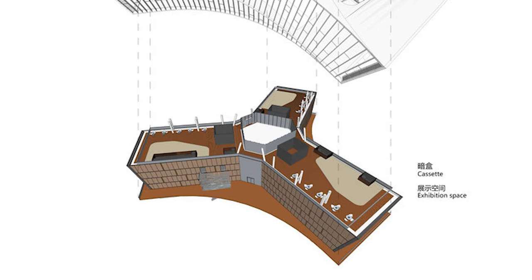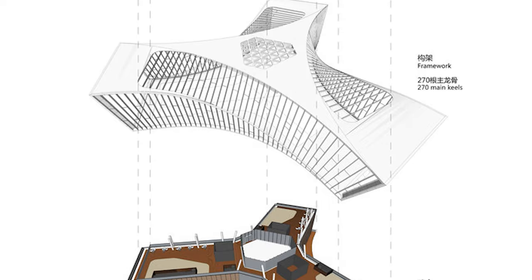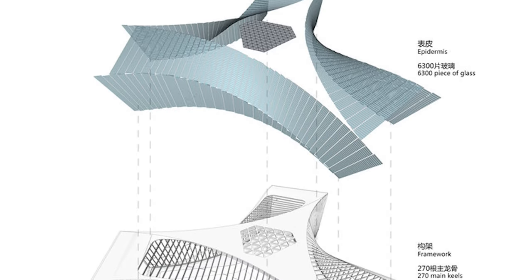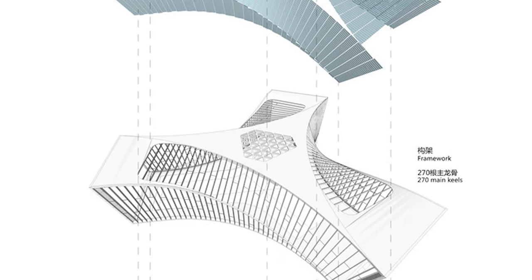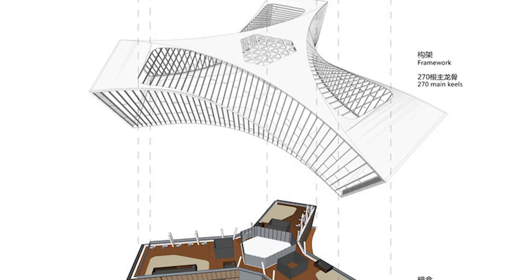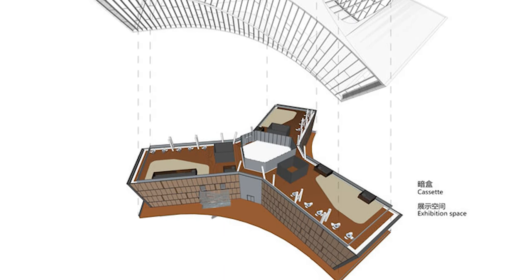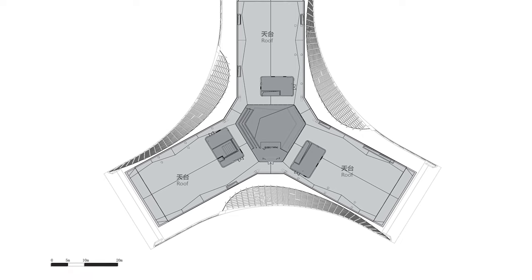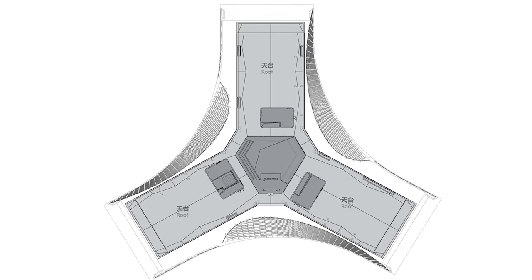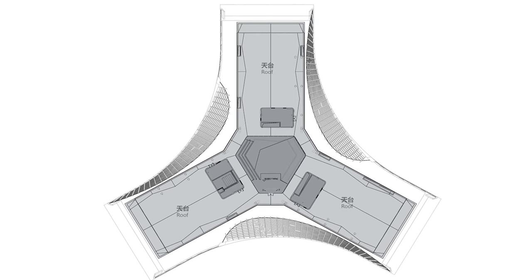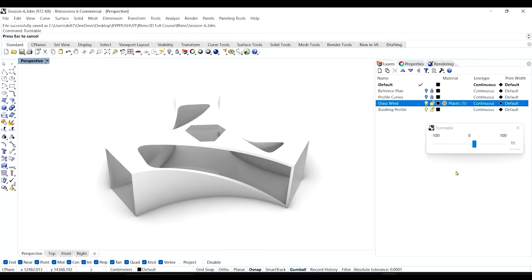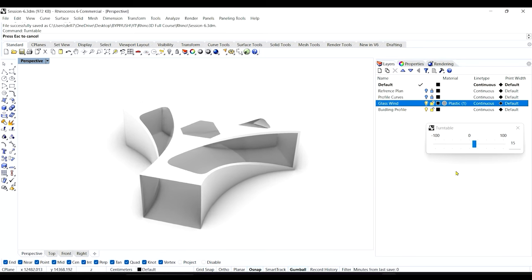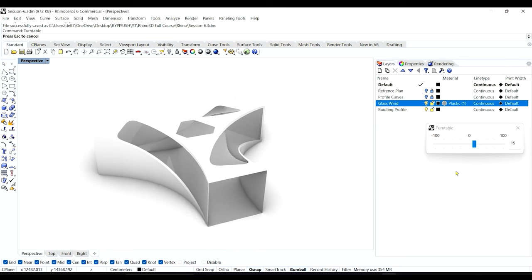Today's model will be Prince Bay Marketing Exhibition Centre, designed by ACOM Architects and located in China. I'll be using a site plan as a reference and will scale that site plan. You can find the drawings from ArtDaily website — I've shared that link in the video description. Today I'll be covering only the skin part of this building. Let's start.